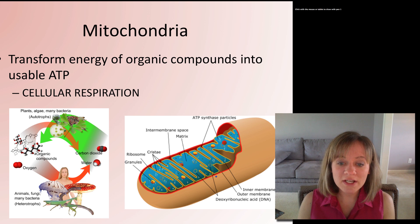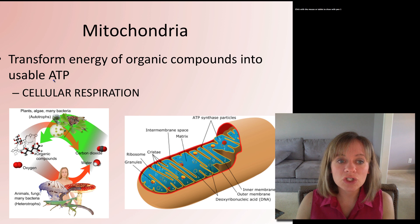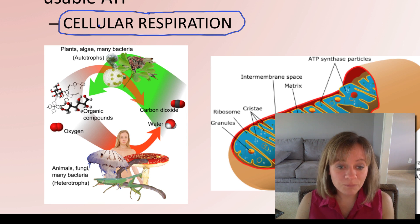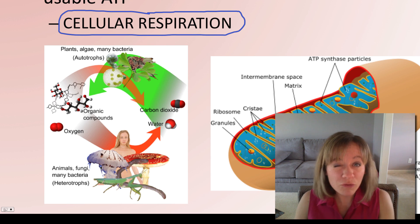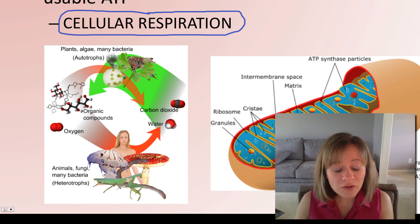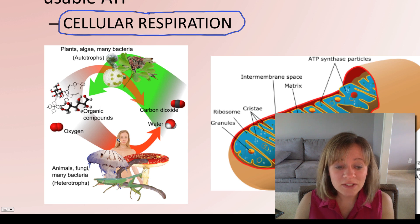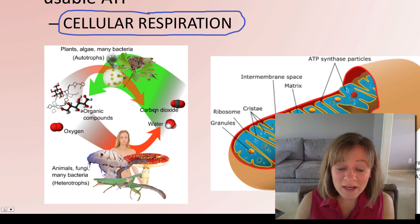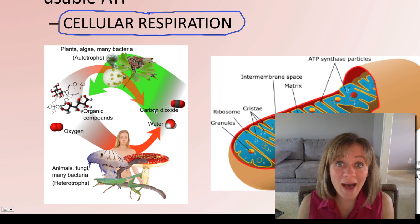Next is a really important organelle: mitochondria. Mitochondria are found in both plant and animal cells and transform the energy of organic compounds into usable ATP — think cellular respiration. A heterotroph takes in oxygen from the atmosphere and eats organic compounds. The mitochondria take the glucose and oxygen and transform them into ATP, producing water and carbon dioxide that we release when we exhale.